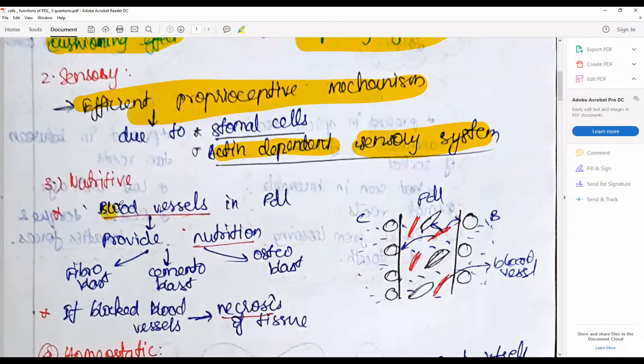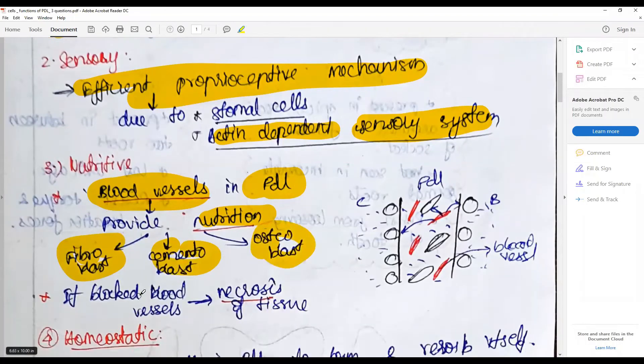Nutritive: there are numerous micro and macro blood vessels in the PDL which provide nutrition to the fibroblasts, cementoblasts, and osteoblasts. If blocked, the blood vessels may lead to necrosis of the tissue or very disastrous situations. In situations like diabetes, the blood supply may be hindered.